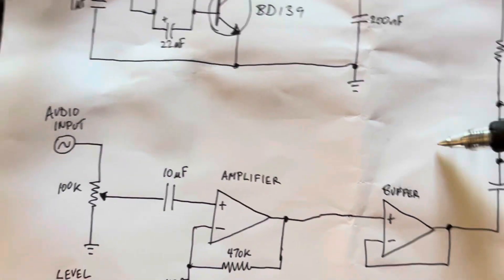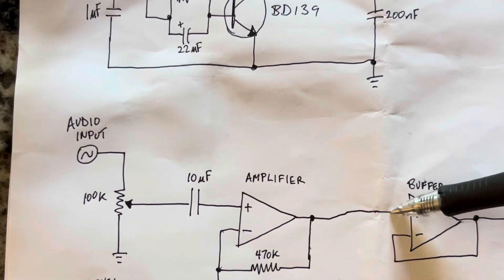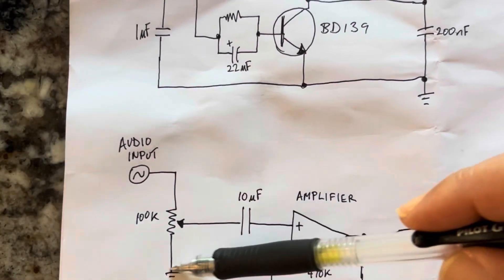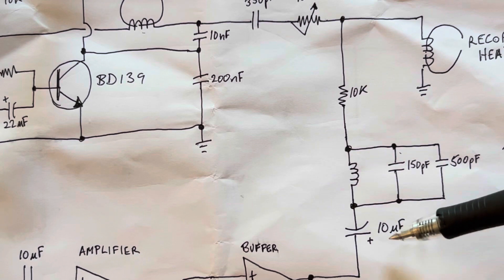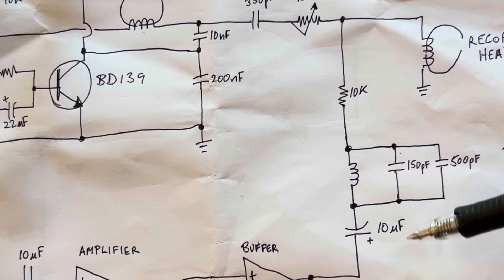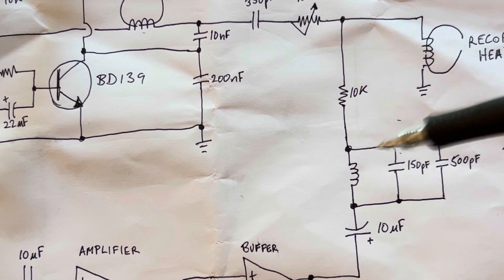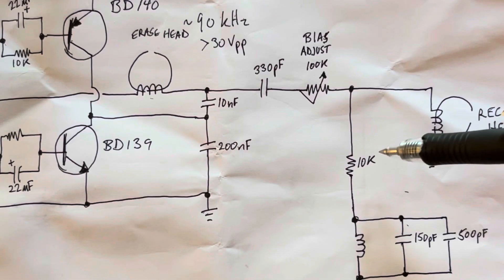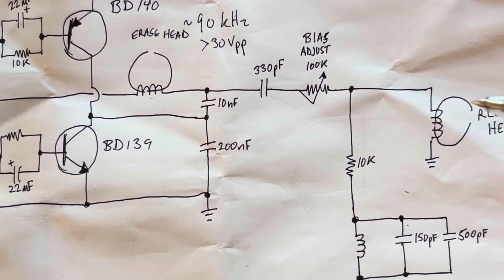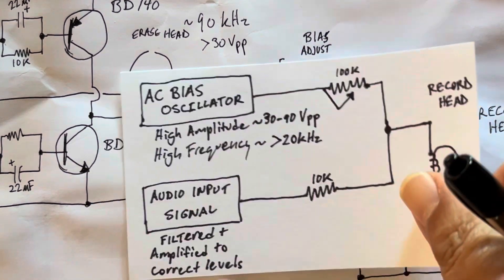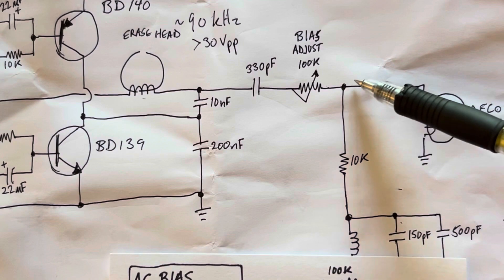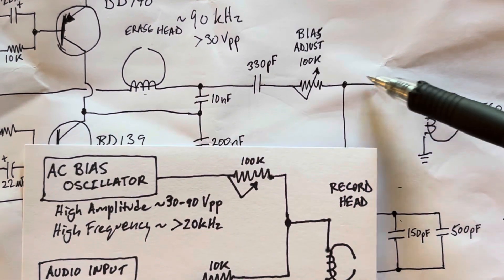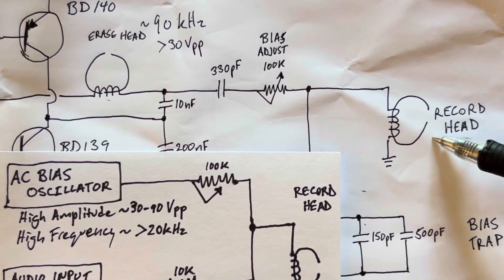Your audio input signal is filtered and amplified. The level is adjusted and it's put out through a 10 microfarad electrolytic capacitor, which centers the audio signal. There's the 10K resistor. All of that gets passively mixed together and goes out to the record head.